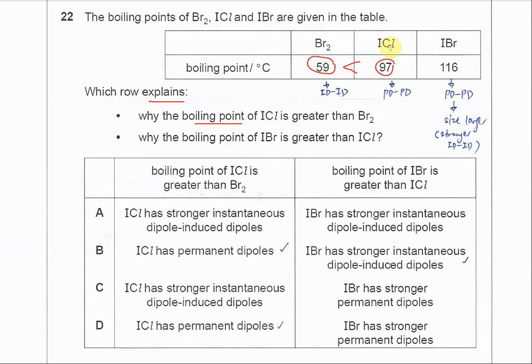And the intermolecular force is PD-PD, permanent dipole-permanent dipole forces. And the bromine is a non-polar molecule. It just has the weak ID-ID forces, instantaneous dipole-induced dipole forces, ID-ID.